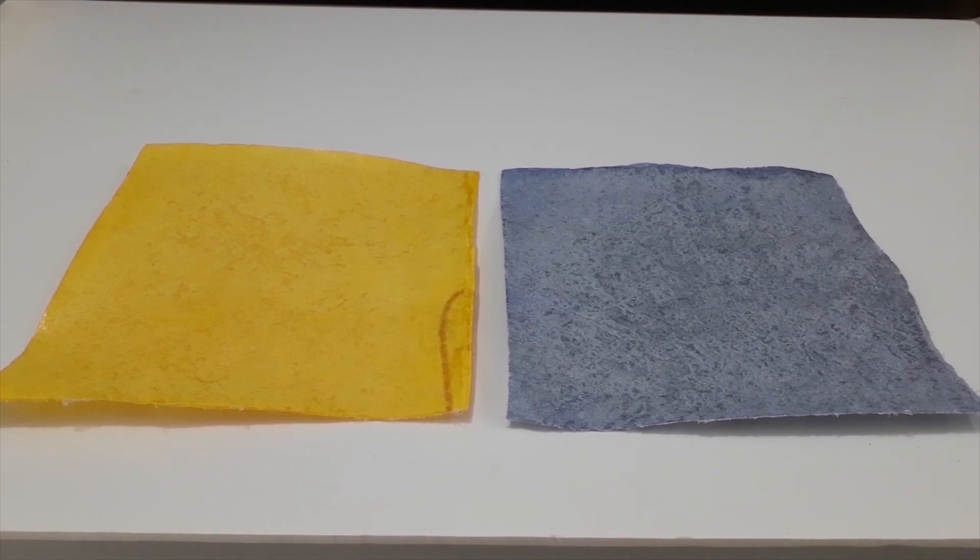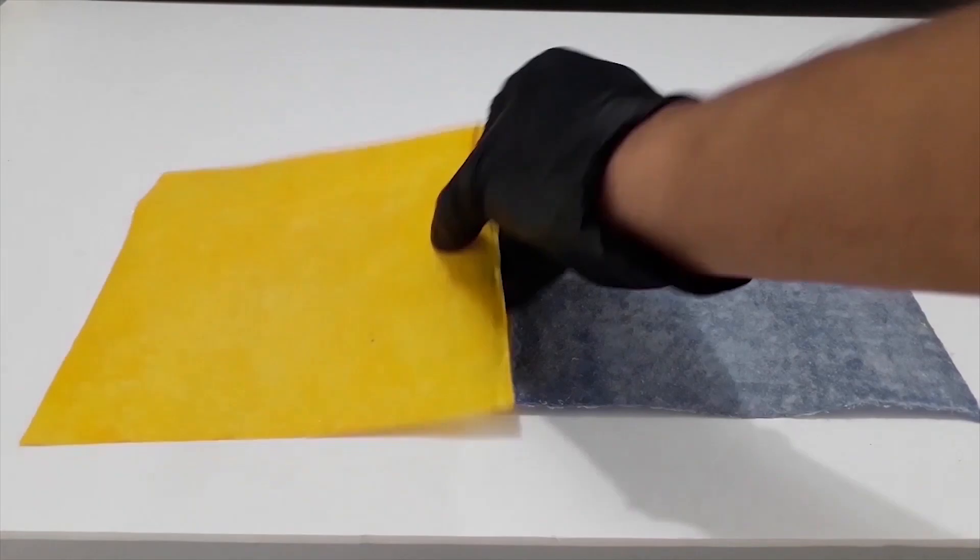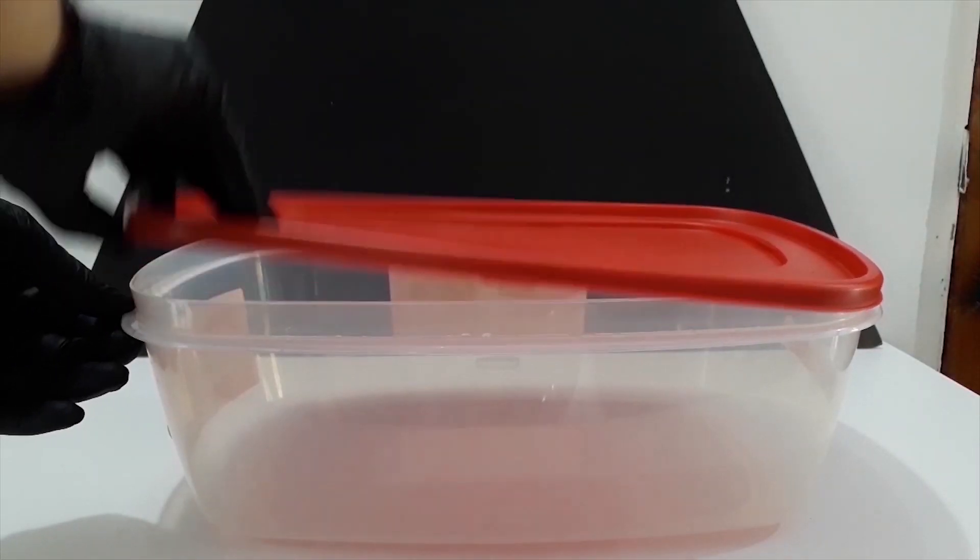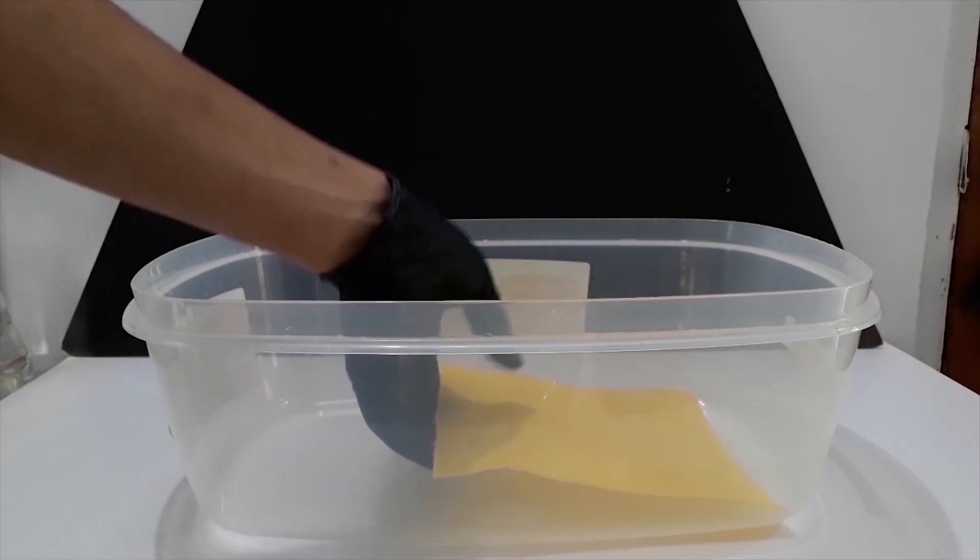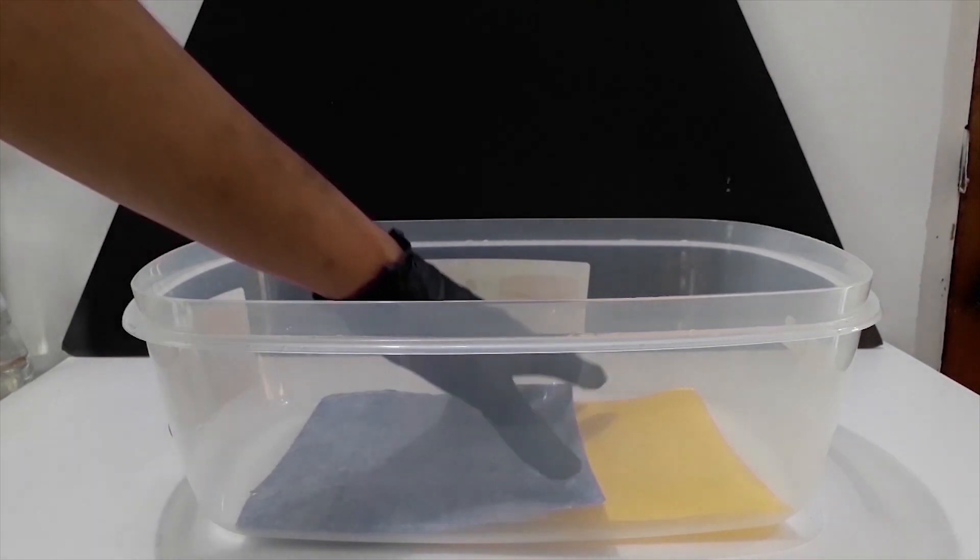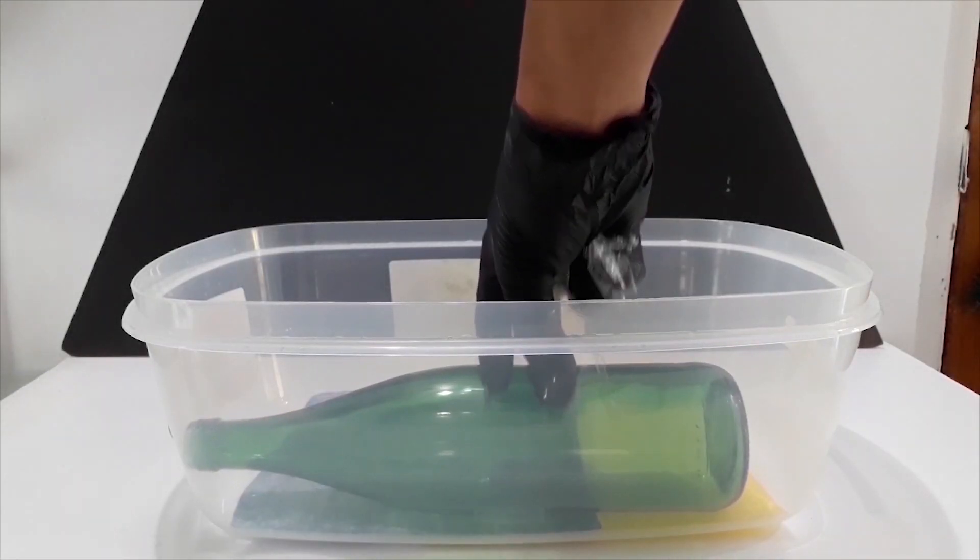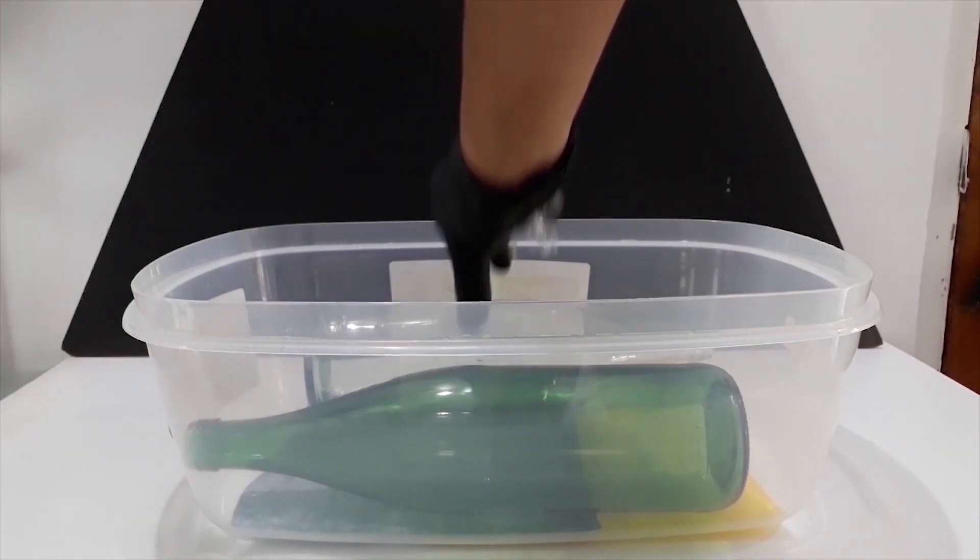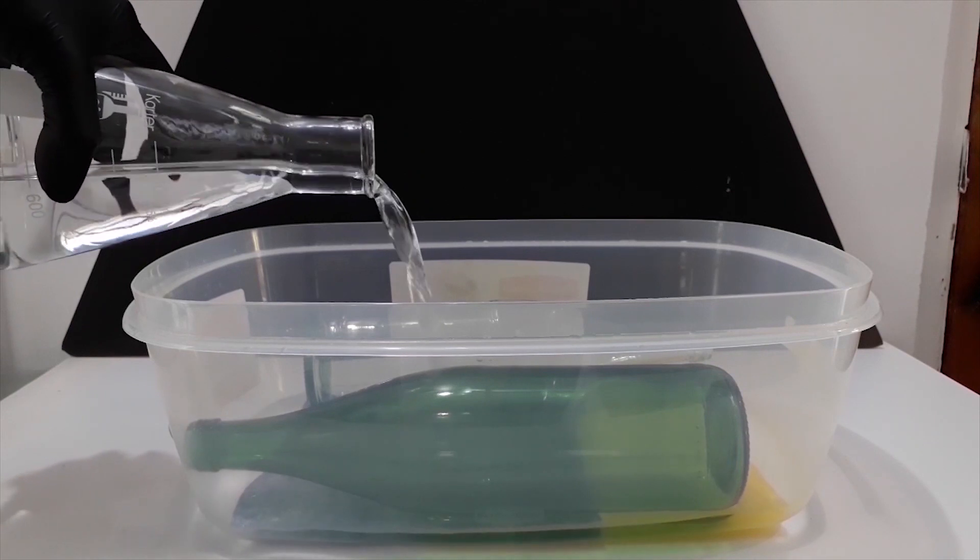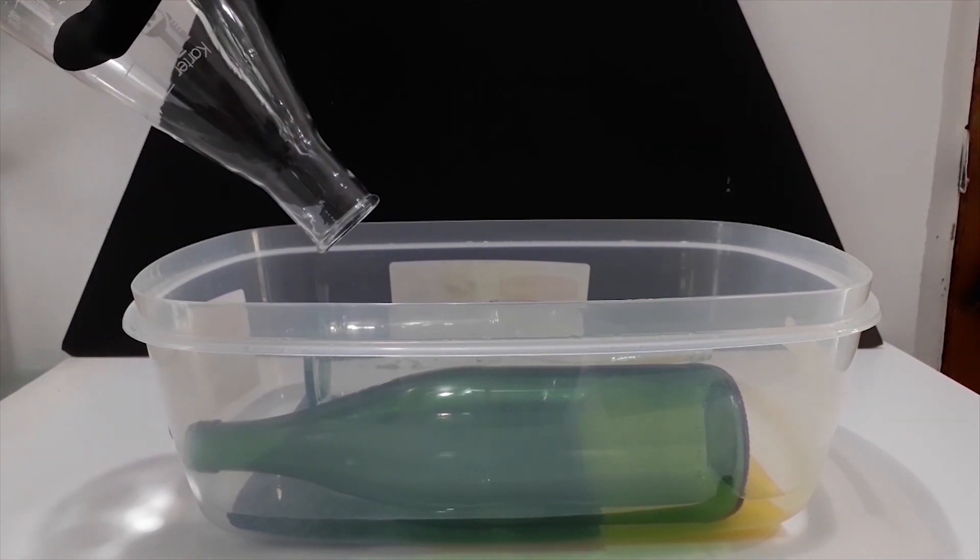This is what the washcloth looks like after curing for one day. I then place the cloth into a large container and weighed it down with 2 glass bottles. This is to prevent the cloth from floating as it is less dense than water. Once it's weighed down, I added all the dechlorinating solution to the container and tilted it to remove any air bubbles from under the cloth.